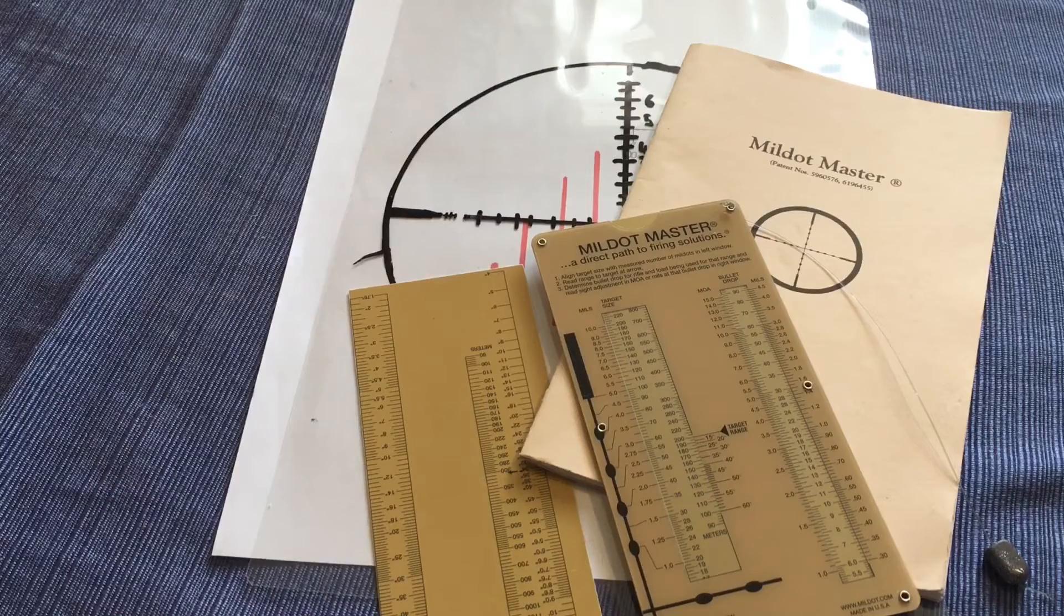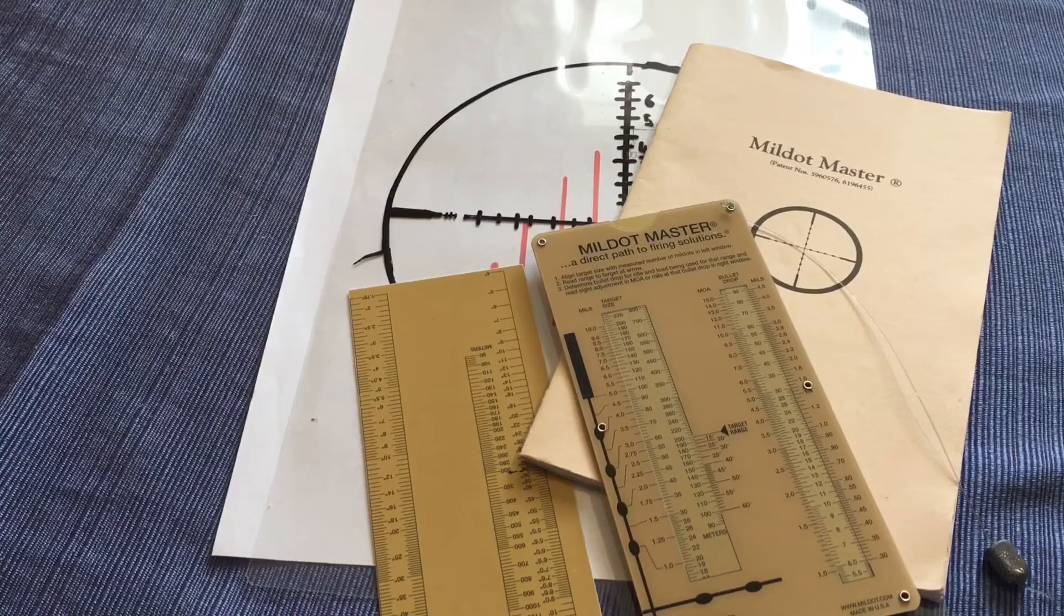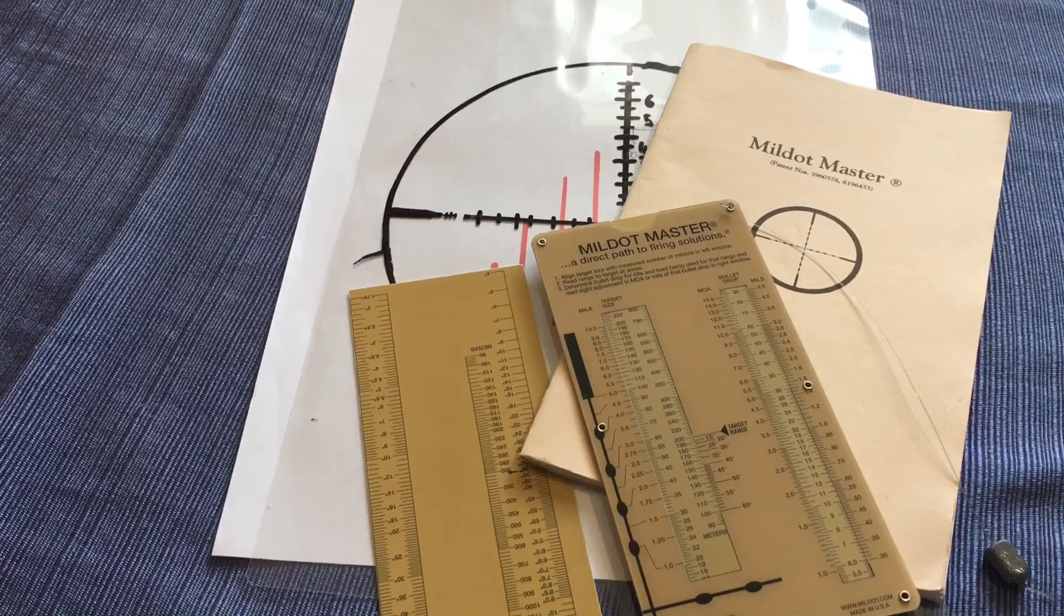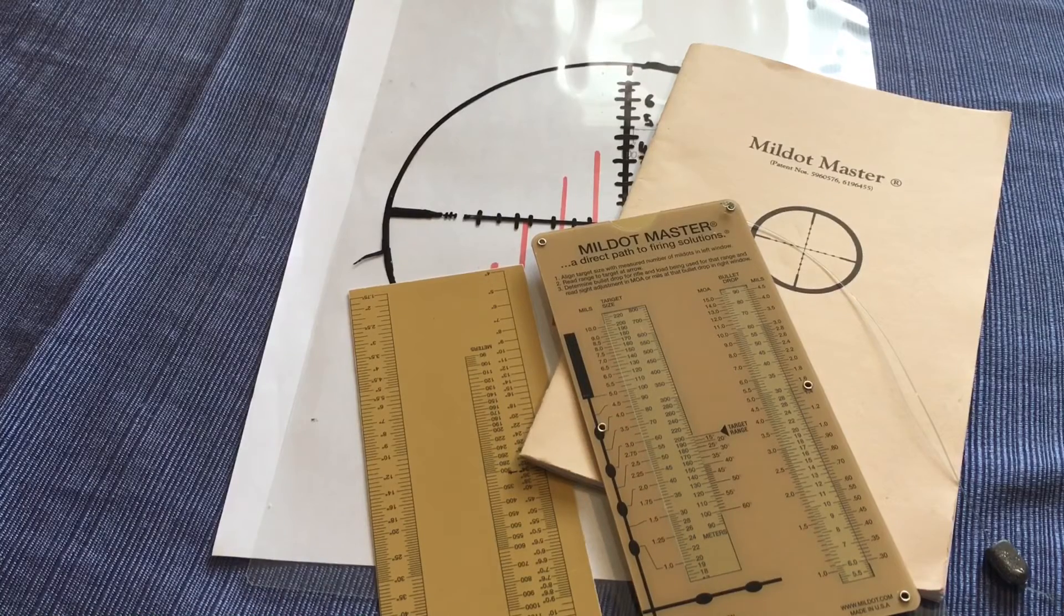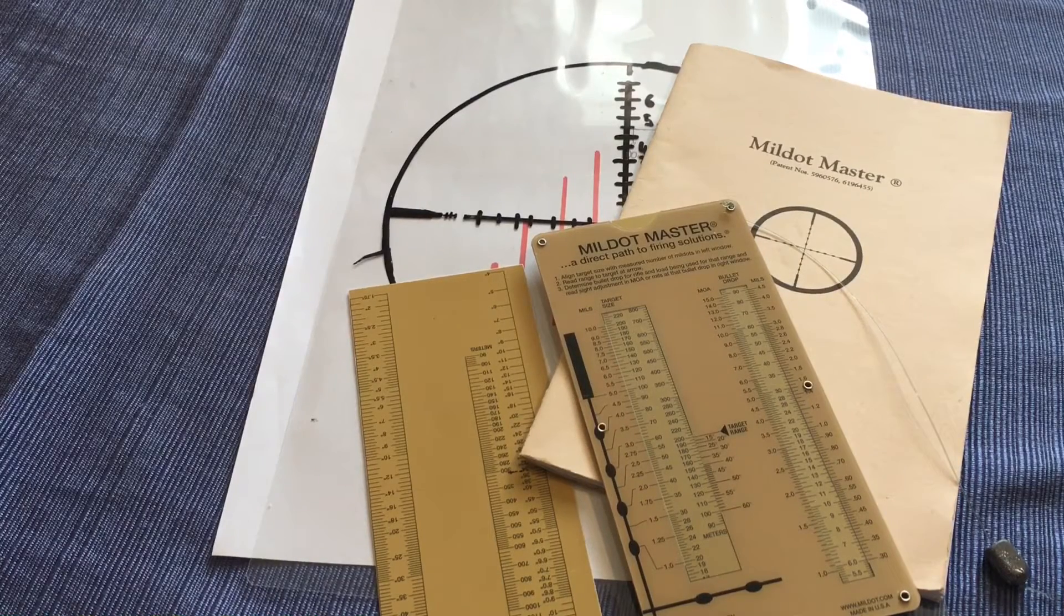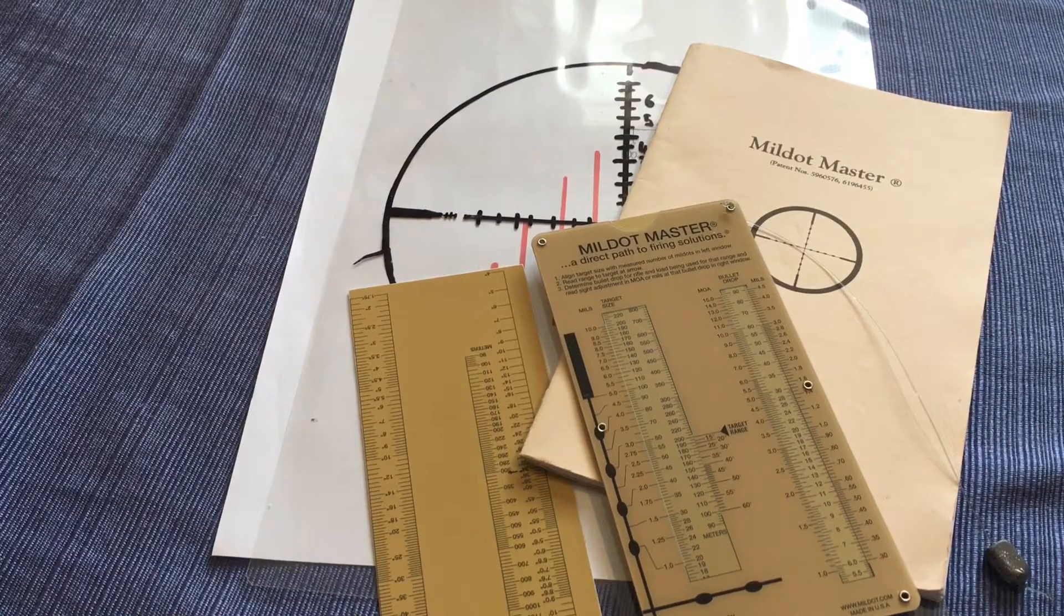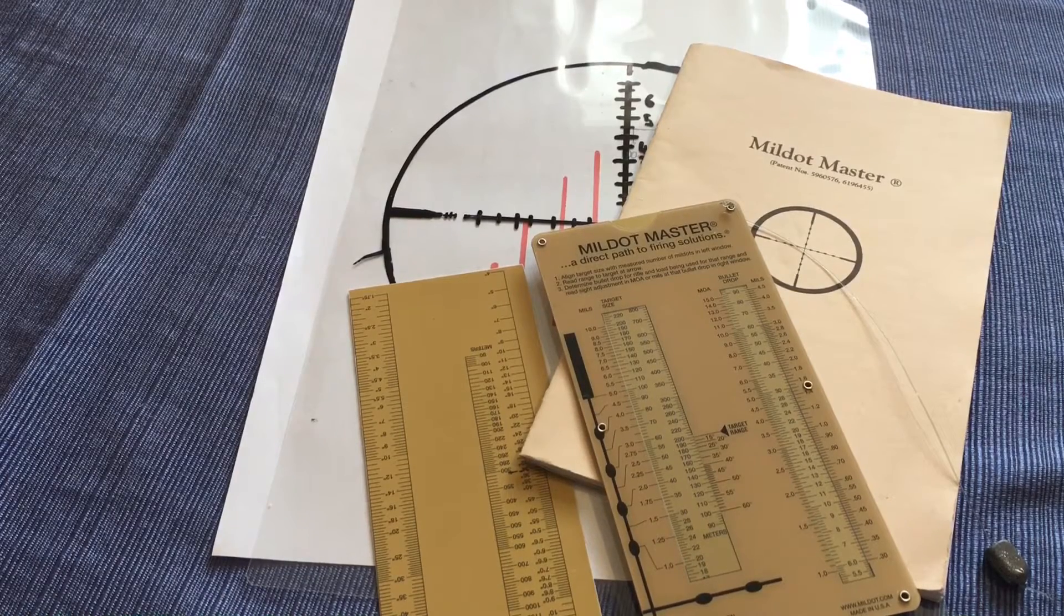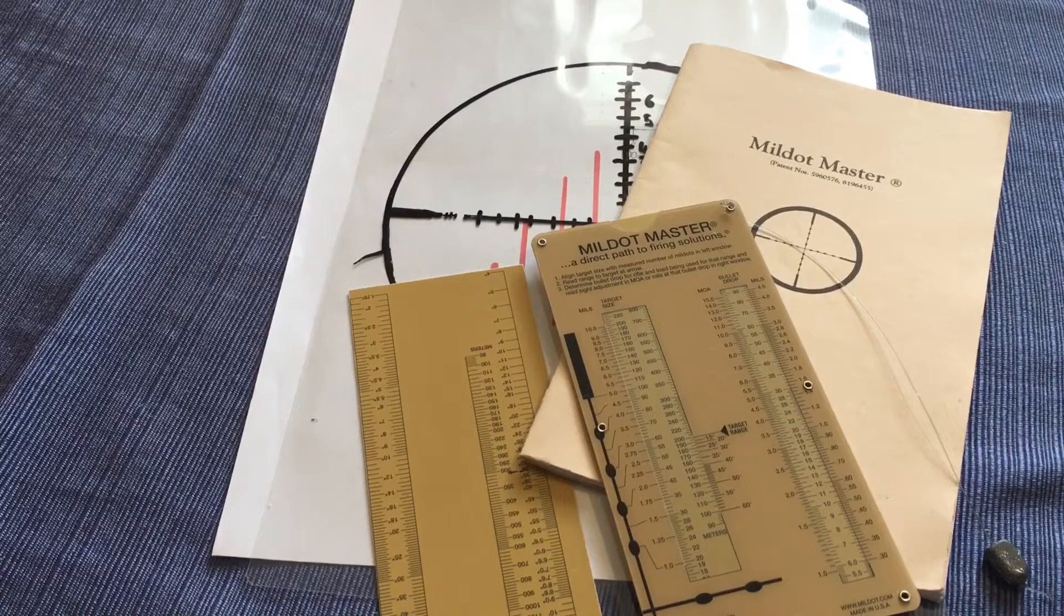Long story short, this is a rangefinder. You might call it an analog rangefinder. We all know how important knowing the distance to your target is if you plan on hitting it. Laser rangefinders are fantastic, I have several of them. The only thing is they do have batteries, circuit boards and all that sort of thing that are prone to fail. And if they can fail, they always will when you need them.